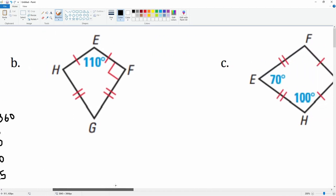We know that angle F is 90°, so we also know that this is 90°. Then this is x, so we can do 110 plus 90 plus 90 plus x equals 360.